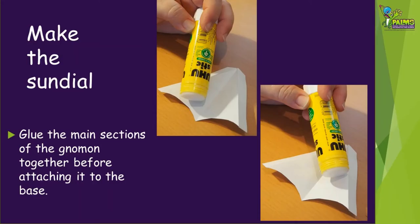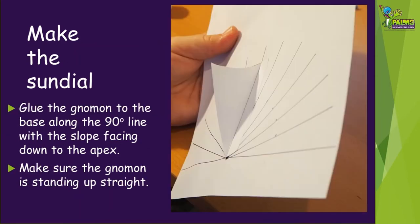Glue the main sections of the gnomon together before attaching it to the base. Glue the gnomon to the base along the 90 degree line with the slope facing down towards the apex and baseline. Make sure the gnomon is standing up straight.